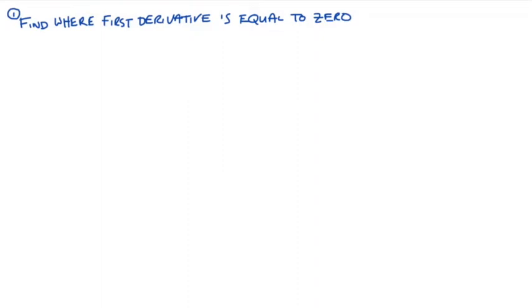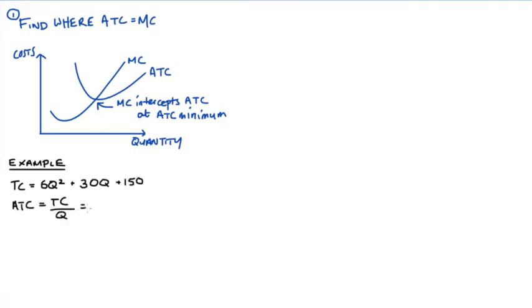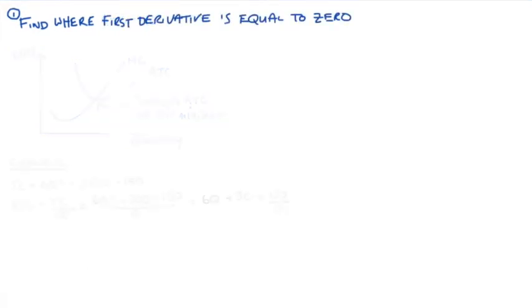The first thing we're going to do is find the first derivative of our average total cost function and set that derivative equal to zero. Before I start, I should mention that in another video I do show a different method of finding minimum average total costs. Specifically, we find the minimum by looking at the intersection of marginal and average total costs. Sometimes students specifically want that method, so I'll link to that video below and you can head there if you like.